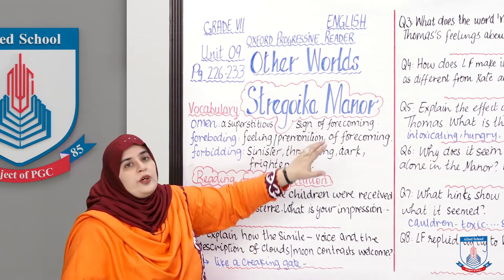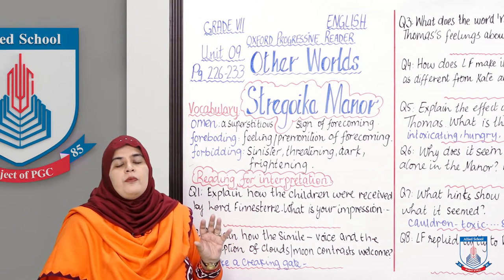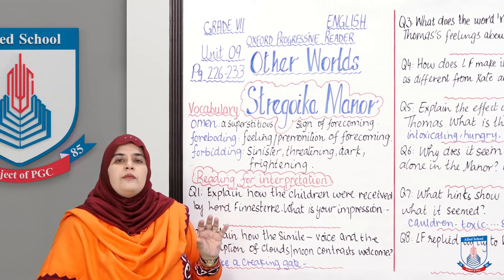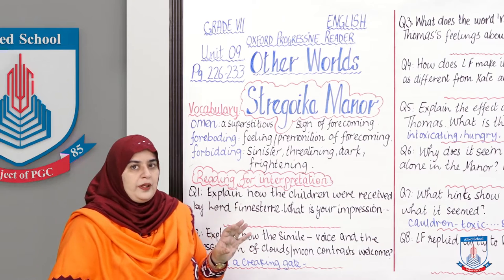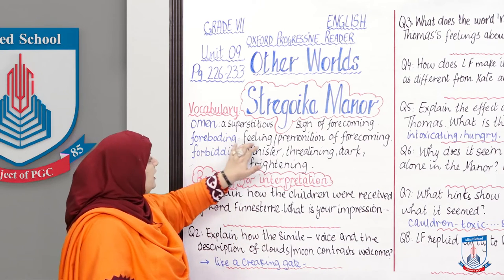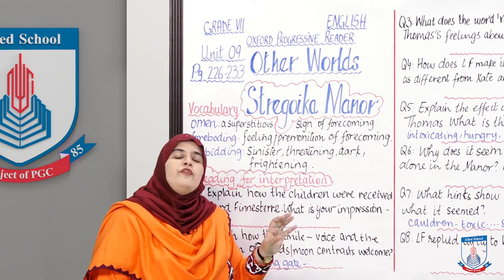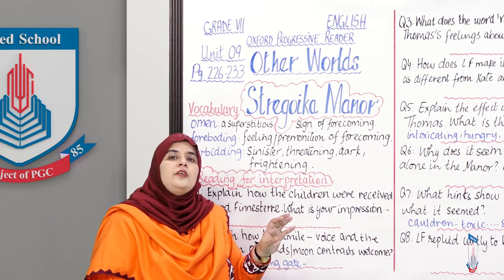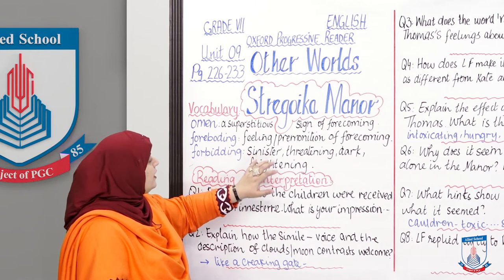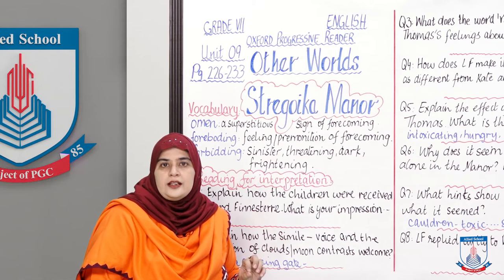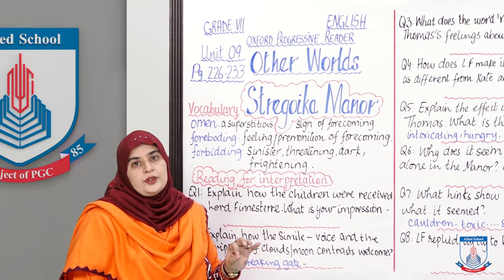Now for vocabulary. First word: 'omen' — a superstitious sign of coming disaster. For example, it was a bad omen for ship owners to have a woman on board in the old days, as sailors considered it bad luck. 'Foreboding' means a feeling or premonition of forthcoming disaster — for example, the house looked foreboding and we were hesitating to enter. 'Forbidding' means sinister, threatening, dark and frightening — for example, his red eyes, tall height, and hairy face made him a forbidding person to speak to.